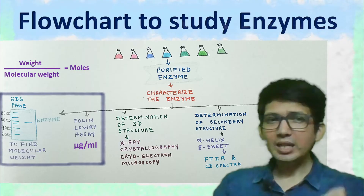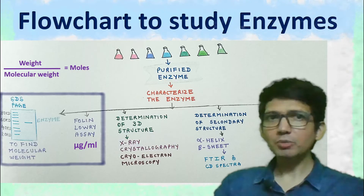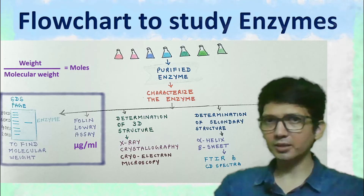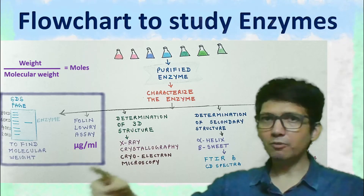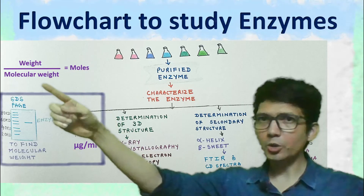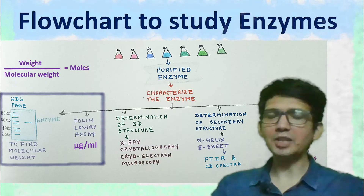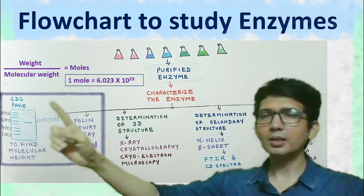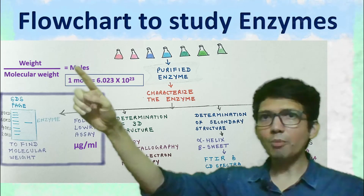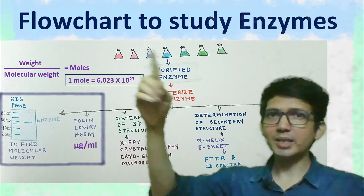Now, if we divide the amount of enzyme by its molecular weight, then this will give us the total number of moles of enzymes that have been purified. So weight divided by molecular weight will give us moles of enzyme present after purification. And since one mole is 6.023 × 10²³ molecules, this information in moles can be converted into the total number of enzyme molecules which have been purified.